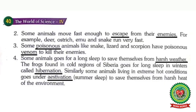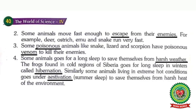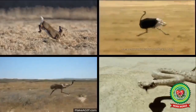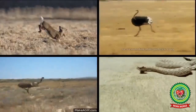Number two: some animals move fast enough to escape from their enemies. Underline 'escape' and write down its meaning: to avoid being noticed. For example, deer, ostrich, emu, and snake run very fast. When they run very fast, this helps the animal to protect themselves from their enemies.